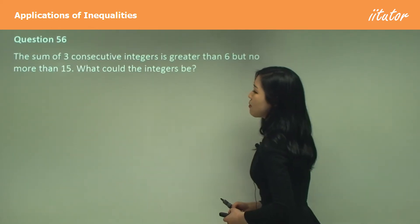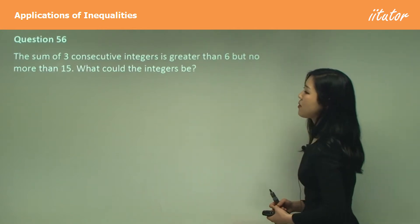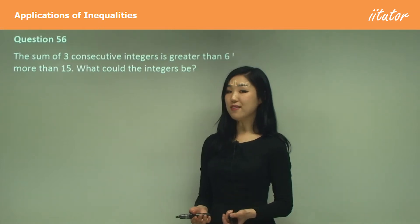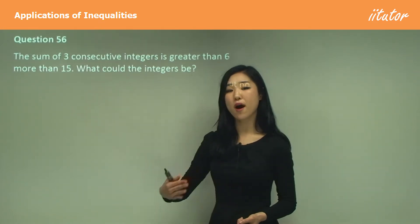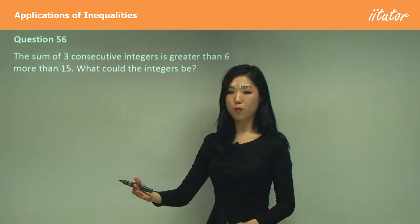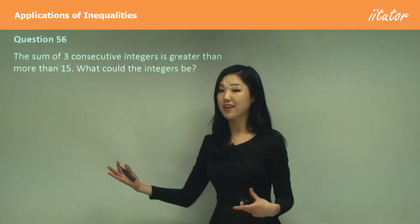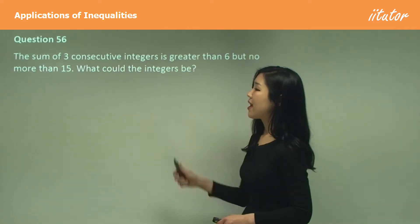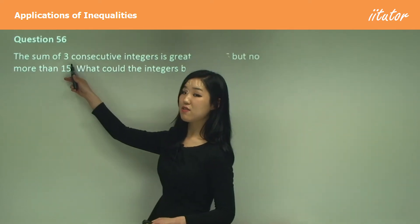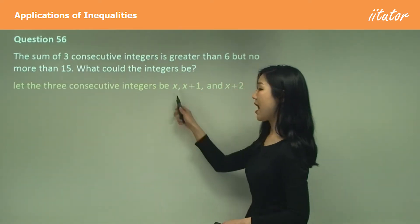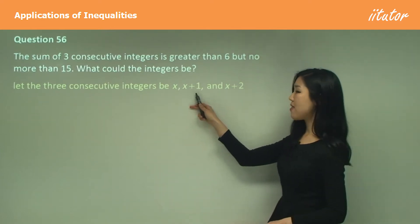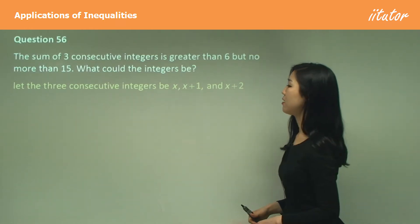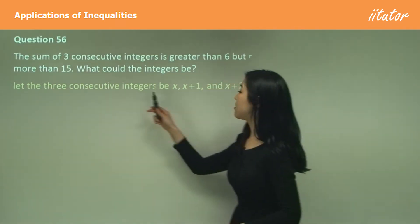Question 56: the sum of 3 consecutive integers is greater than 6 but no more than 15 — what could the integers be? Consecutive numbers are one after the other, like 3, 4 or 6, 7, 8. Let the three consecutive integers be x, x+1, and x+2.